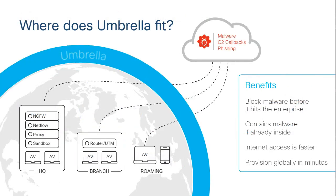DNS security is a great first line of defense. All you have to do is point your resolver to the Umbrella DNS servers, then go into the Umbrella console to define some basic policy — even the default policy will block malware. It's a great first line of defense against command-and-control callbacks, phishing, and malware. On top of that, you could use this to do more granular things like content filtering — if you want to disallow gambling or social networking at certain hours of the day, you can do that with Umbrella.